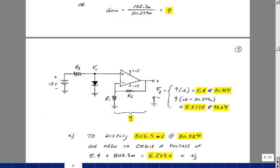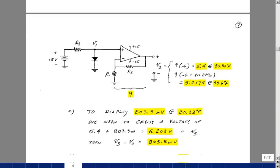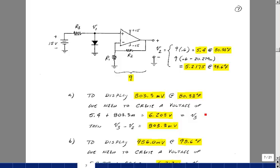Now, our multimeter can take the difference of two voltages. Let's subtract two voltages and try to get the correct display on the multimeter. So, I want to display 803.3 millivolts if I was at 80.33 degrees Fahrenheit. That means that I have to create a voltage that would be 6.203 volts, in other words, 5.4 volts here, plus this, so that when I subtracted that voltage from this, I would get this reading.